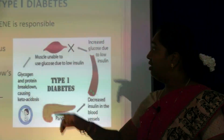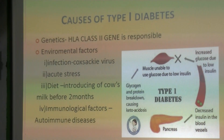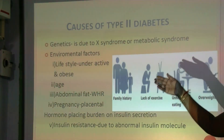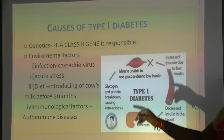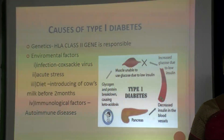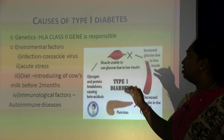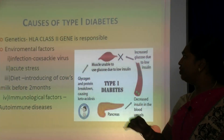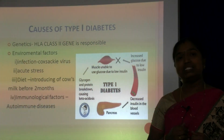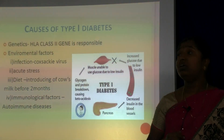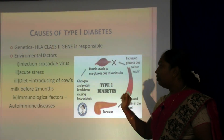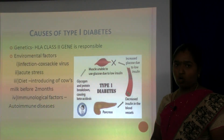The environmental factors include viral infection caused by coxsackievirus and acute stress — that is, any physical injury or stress. Regarding diet, the early introduction of cow's milk before 2 months of age, which contains bovine serum albumin antibodies, is a contributing factor to Type 1 diabetes. The fourth factor is immunological — it is an autoimmune disease.